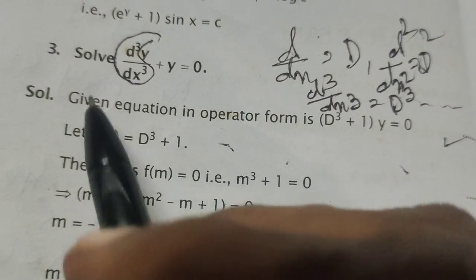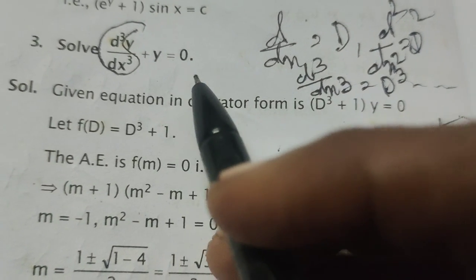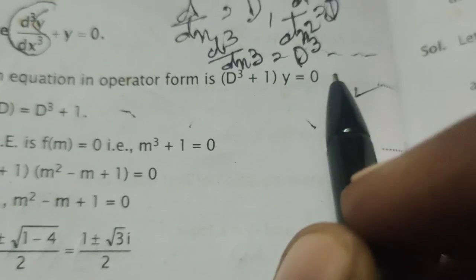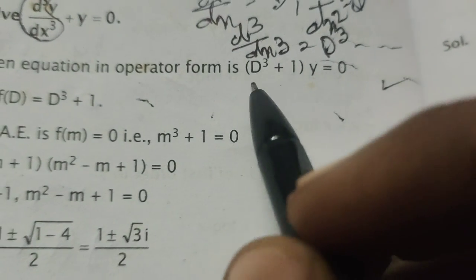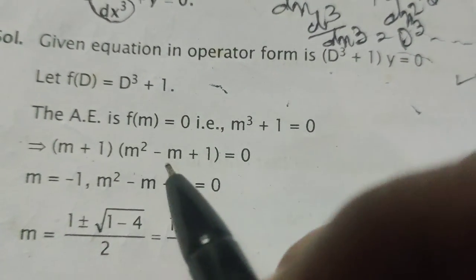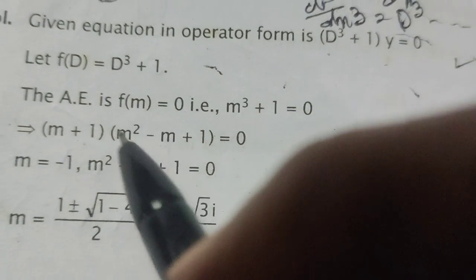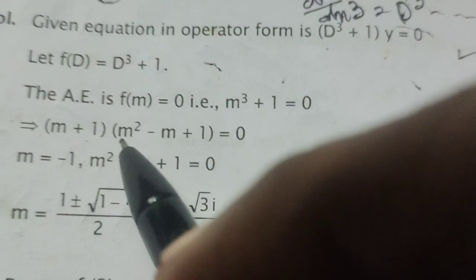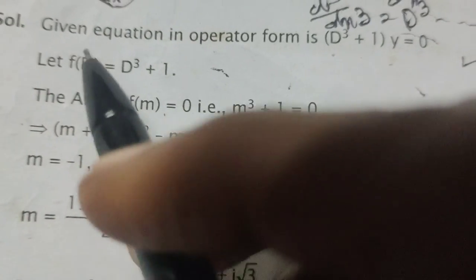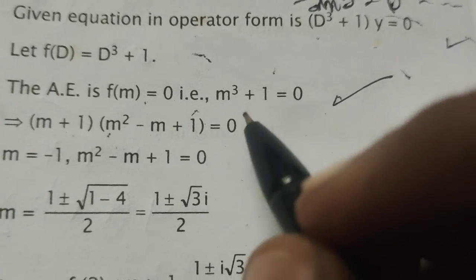First, find out the complementary function. Let f(D) = D³ + 1. Now, to find the complementary function, consider the auxiliary equation, that is f(m) = 0. Writing f(D) in terms of m: m³ + 1 = 0.